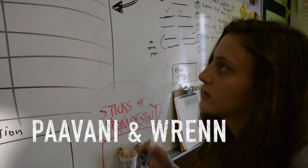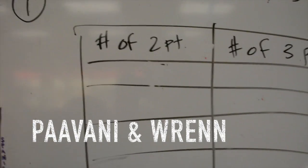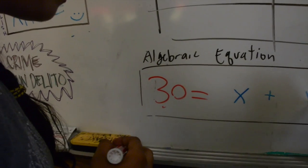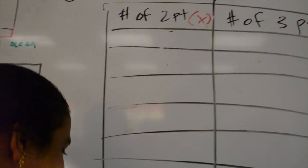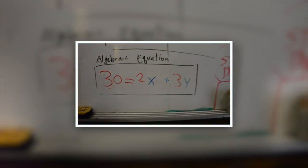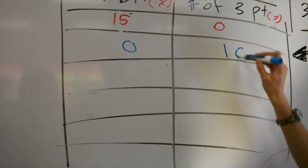I think we can work with that. So you could have a combination of two-pointers and three-pointers. Let's let the two-pointers be x and the three-pointers be y. The coefficient for x is two and for y is three. Now let's plug some in. How about fifteen twos and no threes? Or zero two-pointers and ten three-pointers?